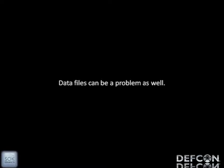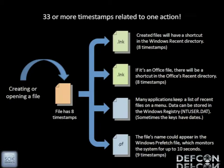Data files have timestamps too. So when you open or create a file on a Windows-based system, there aren't four timestamps, and there aren't eight — there are 33 timestamps. The file itself has eight stamps: four in Standard Information, four in File Name. The shortcut in My Recent Documents has eight timestamps. If it's an Office file, that's another eight timestamps. Then there are registry entries, and the Prefetch has nine timestamps. So now we have to worry about 33 timestamps total. Adobe Acrobat also stores its most recently opened files inside the registry.